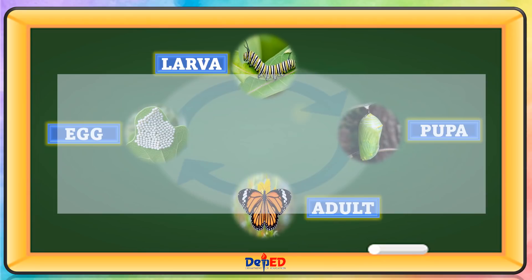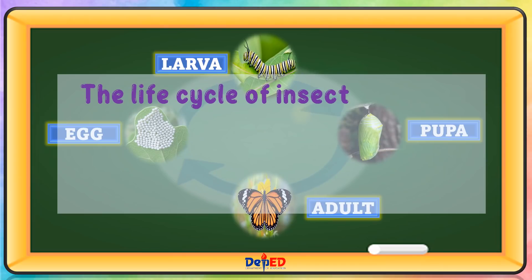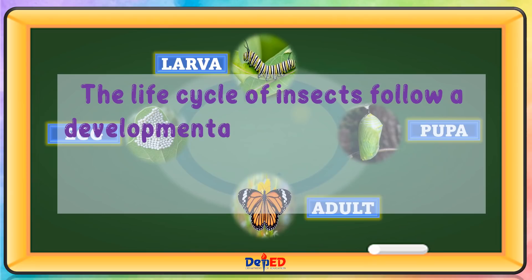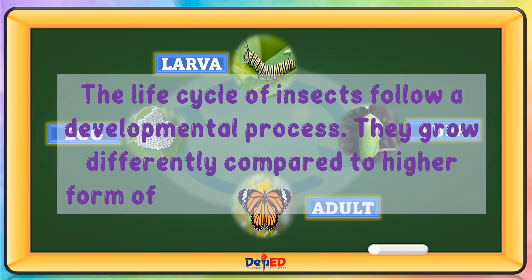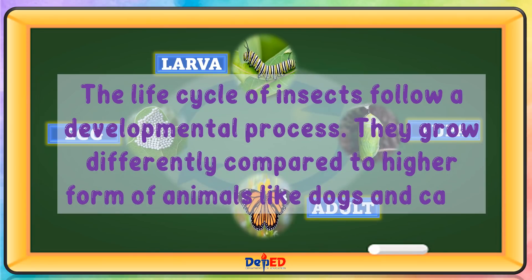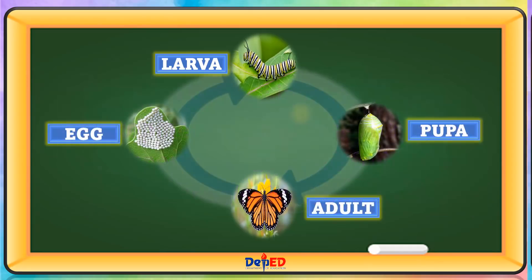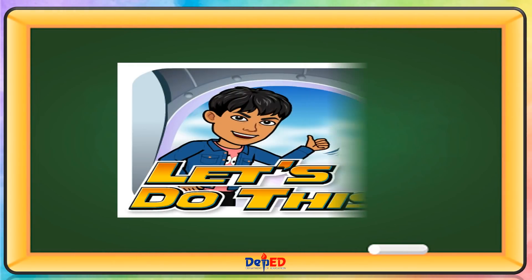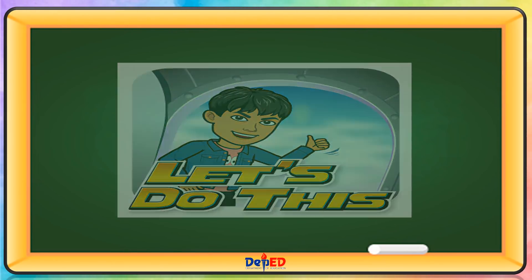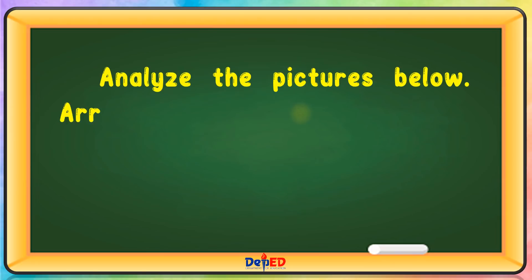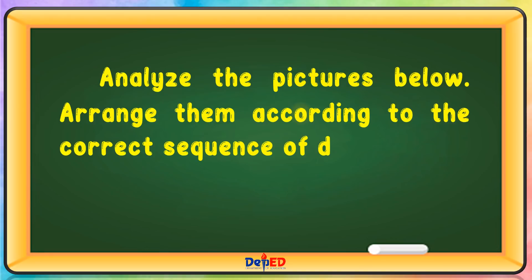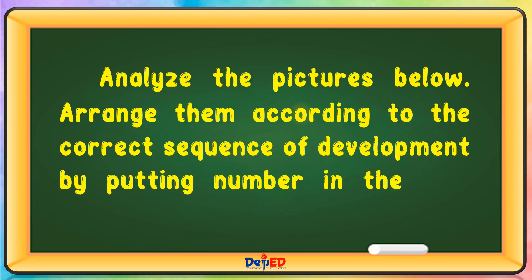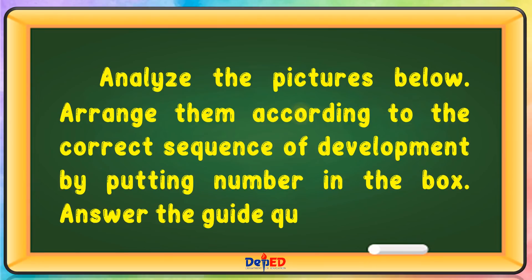The life cycle of insects follows a developmental process. They grow differently compared to higher forms of animals like dogs and cats. Let's do this! Analyze the pictures below. Arrange them according to the correct sequence of development by putting a number in the box. Answer the guide questions.